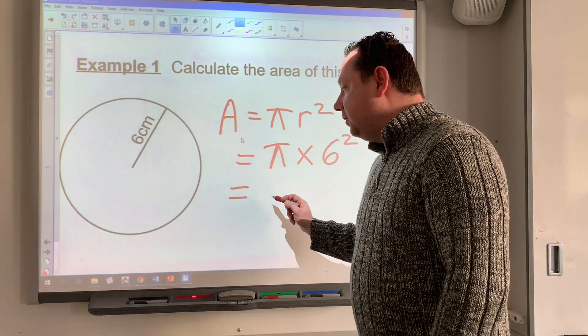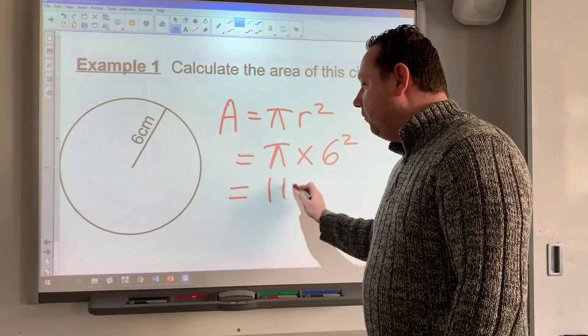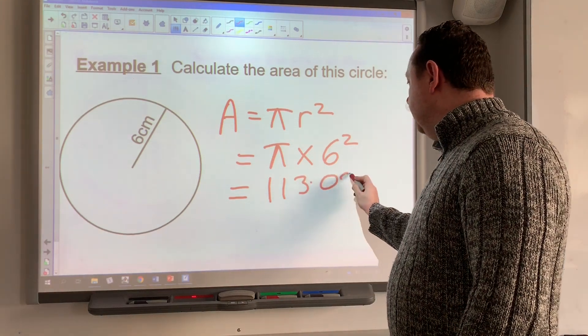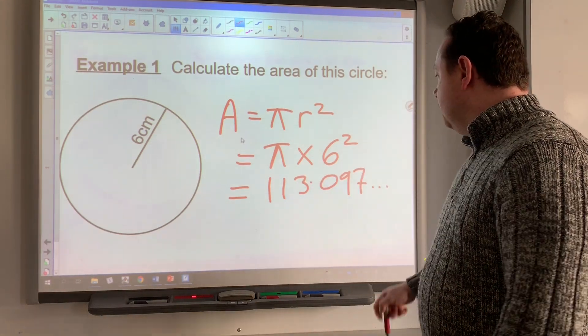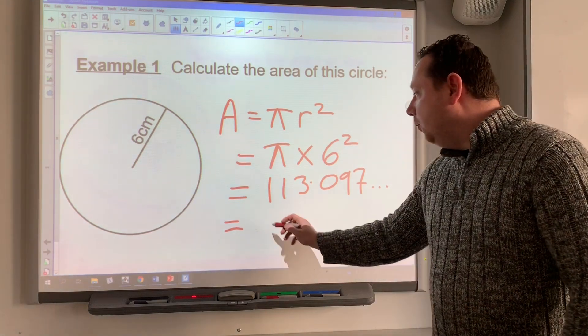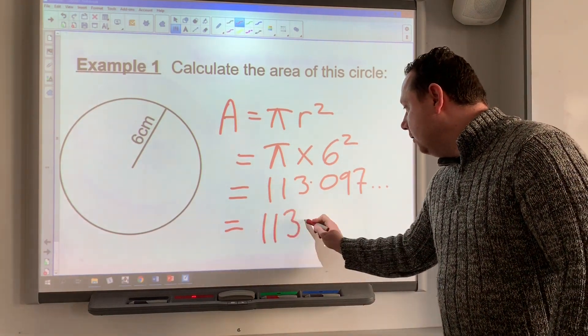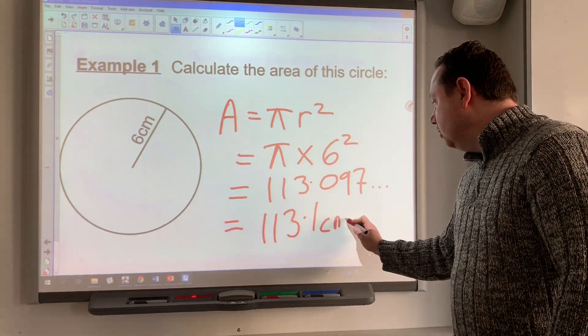If you do π × 6² in the calculator, you get 113.097. Rounding that to one decimal place, you get 113.1 cm².